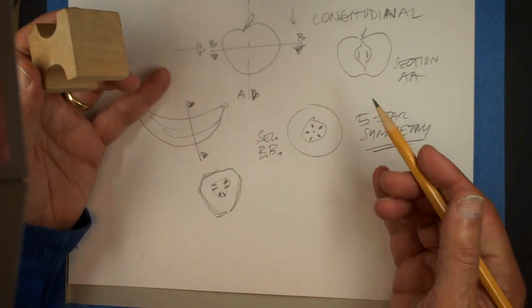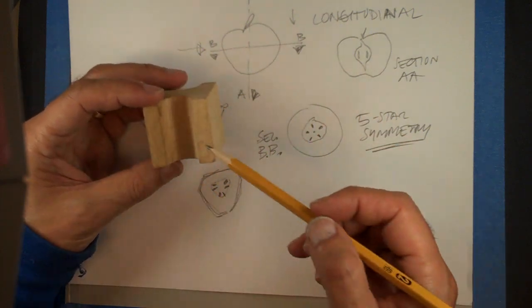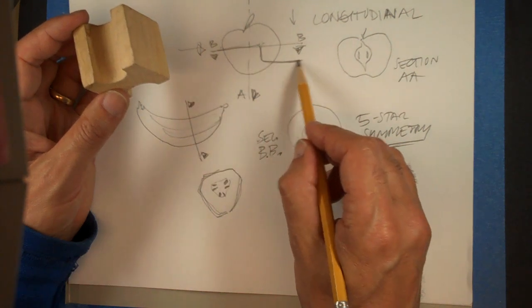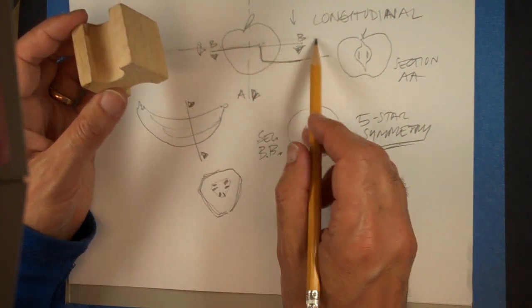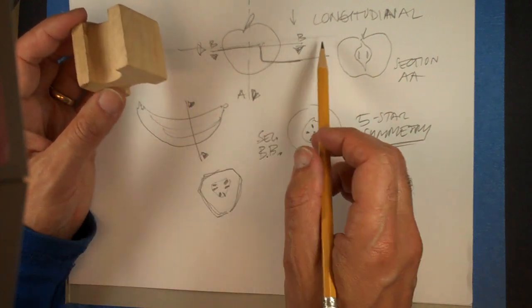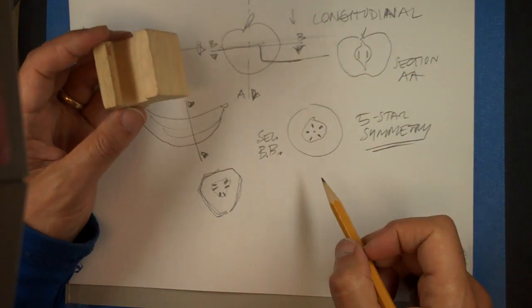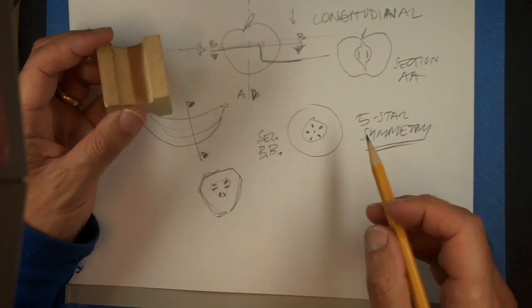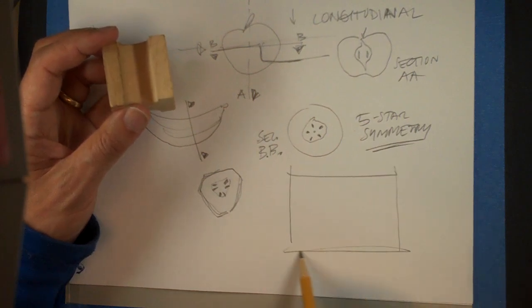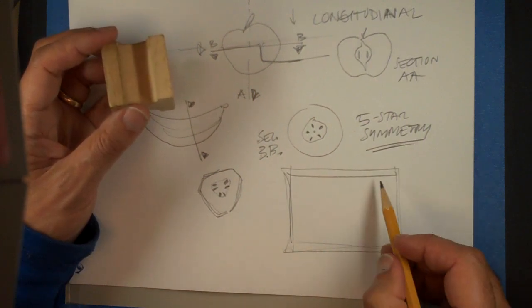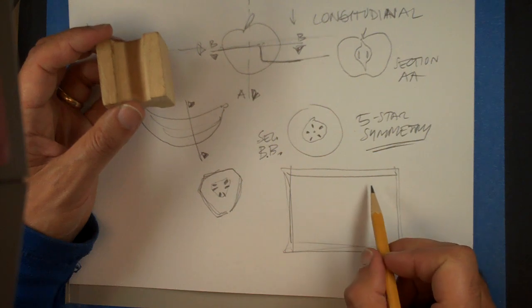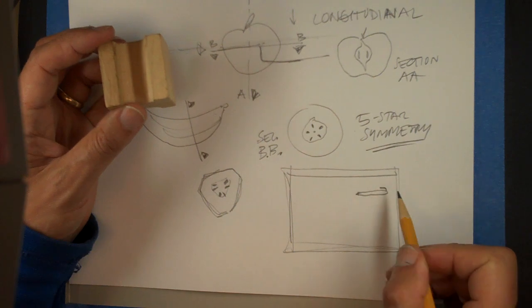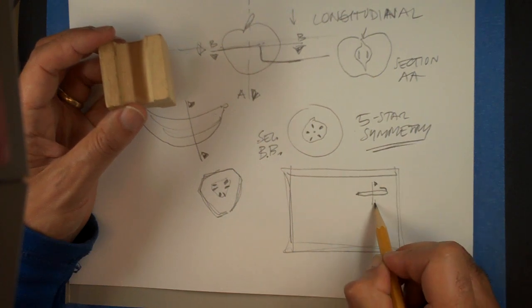So sections are really useful and the way you pick your section is what's gonna give me the most information with maybe one cut. Sometimes people do sections that are elaborate where the plane of the section changes, but normally we just do straight sections. For the drawing we might want to show at least maybe a little thumbnail of your object to show where the section is going through.